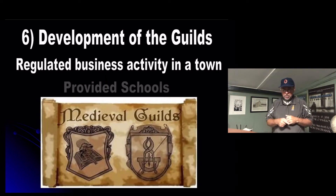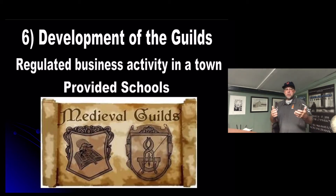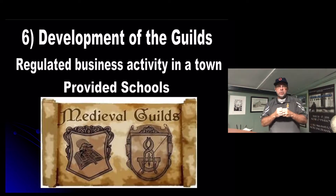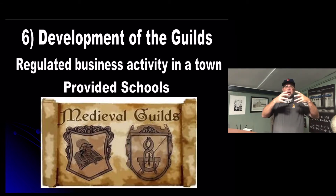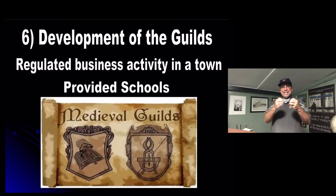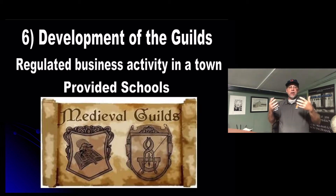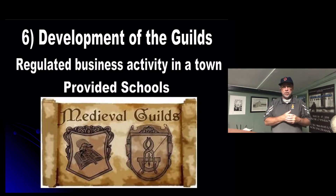Last time we talked about the development of the guilds, which was number six in our steps or the path that they took. Towns began to build around market areas, and craftsmen began to move there to make their crafts and sell at the markets or fairs. When several of the same type of skilled laborers or merchants moved into an area, they had to get together and work out a business plan so they would not overlap each other's territory. That was how the development of the guilds began — not just in merchants and craftsmen, but also in education.